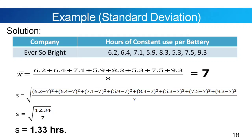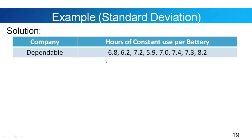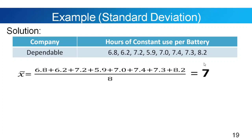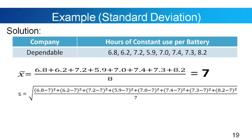Now for Dependable Company: 6.8, 6.2, 7.2, 5.9, 7.0, 7.4, 7.3, 8.2. The mean is also equal to 7. Applying the sample formula, we have the square root of the summation of squared deviations divided by 7 (n minus 1, which is 8 minus 1). Simplifying: s equals the square root of 3.62 divided by 7. The standard deviation of Dependable Company is 0.72 hours.